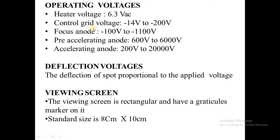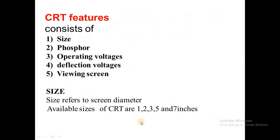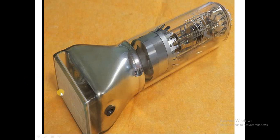Regarding operating voltages: heater voltage is 6.3V, control grid voltage is -14V to -200V. The pre-accelerating anode is 600V to 6000V, and the accelerating anode is 200V to 20,000V. Deflection is proportional to the applied voltage. The viewing screen is rectangular in shape with a size of 8×10 cm. The length of the CRT tube preferred is 5 to 6 inches.